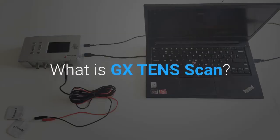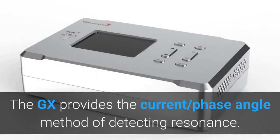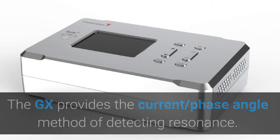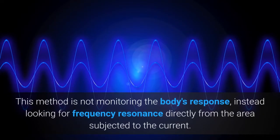What is GX10 Scan? The GX provides the current and phase-angle method of detecting resonance. This method is not monitoring the body's response, but instead looks for frequency resonance directly from the area subjected to the current.